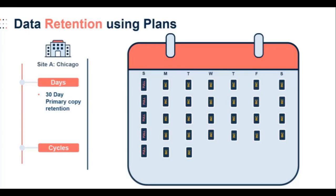In the same configuration of 30 days worth of retention, when we hit Day 31, we cannot simply delete the first day of data. In between fulls are incremental jobs that build off of the last full ran in the environment. Without the full within that cycle, incremental backup data is useless on its own, so we would have to age in multiples of seven — the amount of days each cycle has been defined for in this configuration.